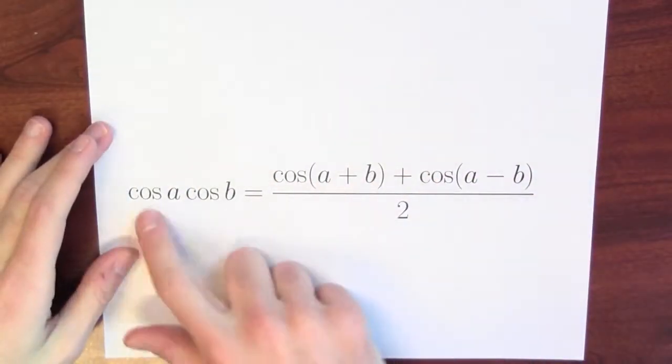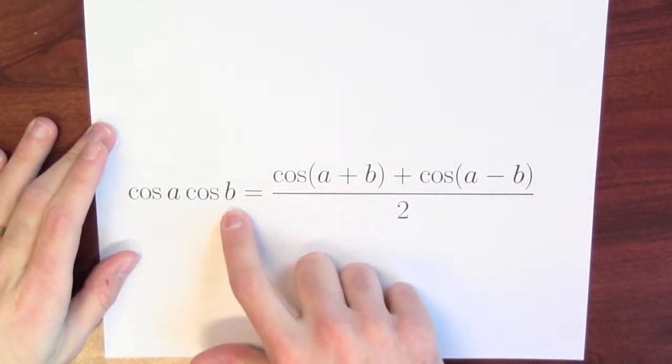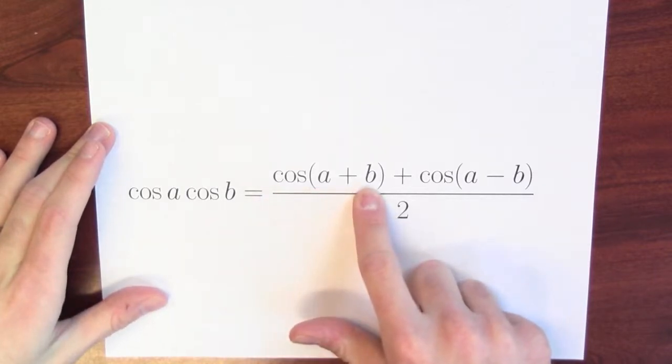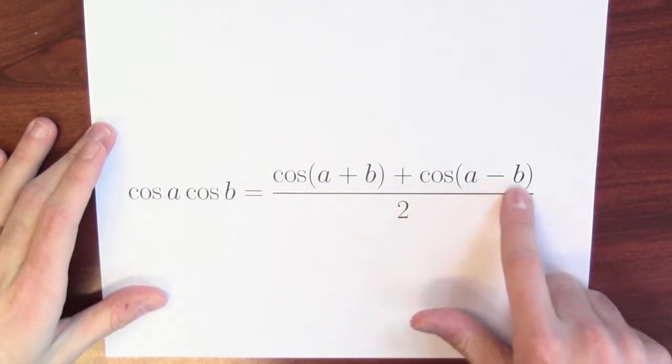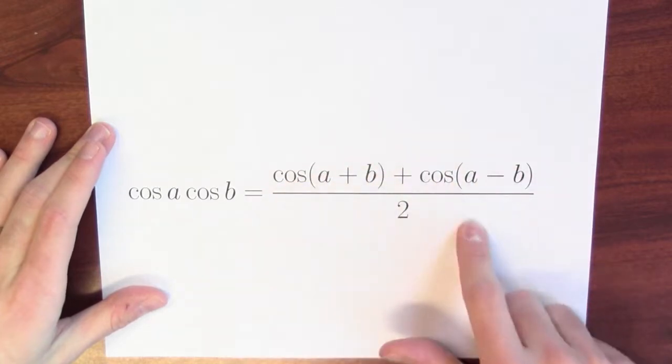The idea is to use a cosine product identity, namely this formula: the cosine of a times the cosine of b is the cosine of a plus b and the cosine of a minus b averaged together. Perhaps somewhat surprisingly, you can use this cosine product identity to multiply numbers. Let's see how.